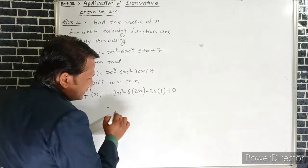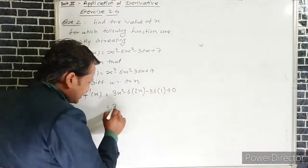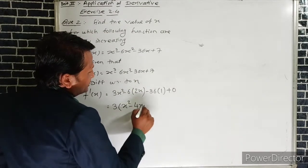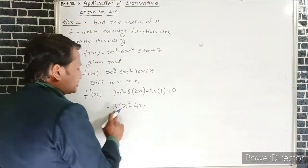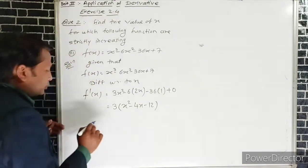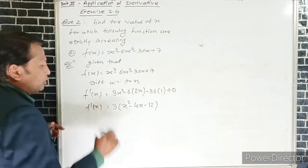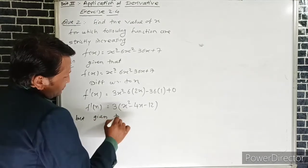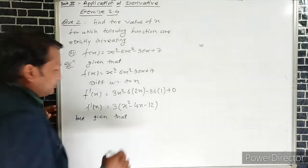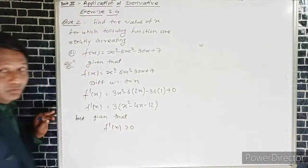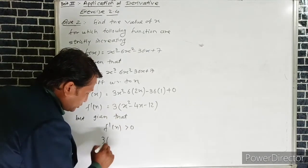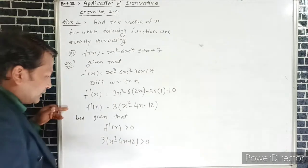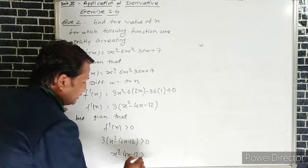So f'(x) = 3x² - 6(2x) - 36(1) + 0. Taking 3 common: 3(x² - 4x - 12). By the given condition f'(x) > 0, so 3(x² - 4x - 12) > 0. Shifting 3 to the right: x² - 4x - 12 > 0.